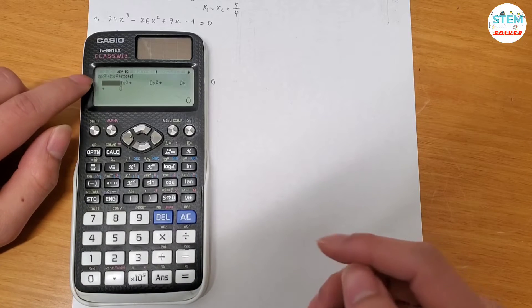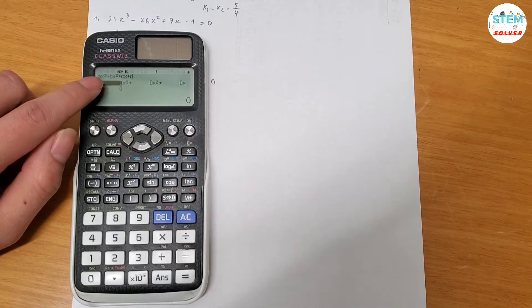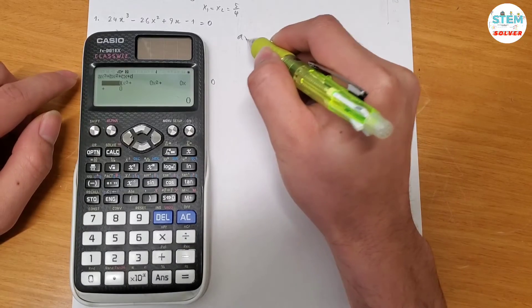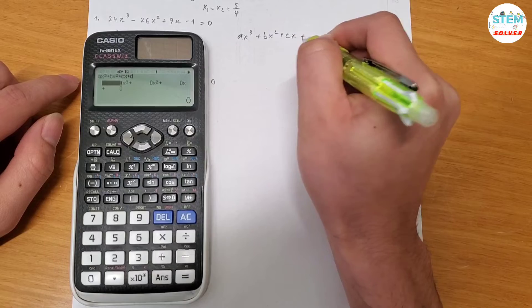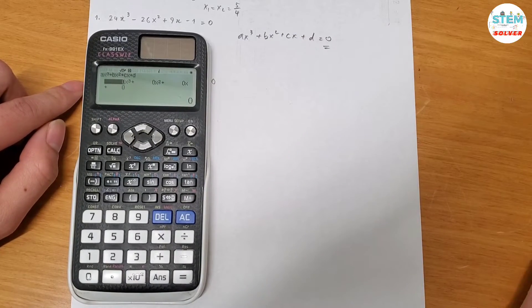Alright, so in order to get the solution, you have to get the equation in this form ax cubed plus bx squared plus cx plus d equal to 0. Has to be equal to 0.